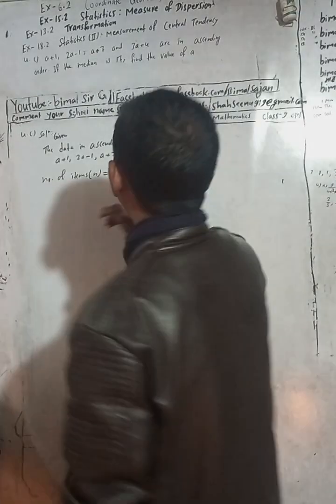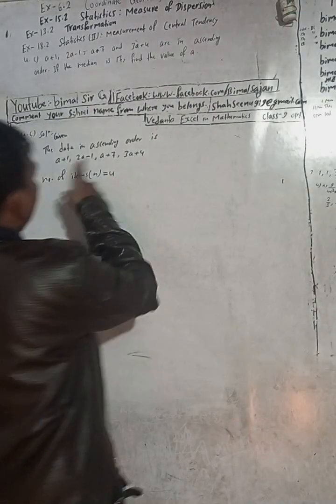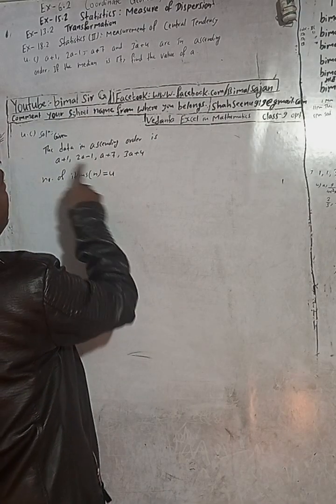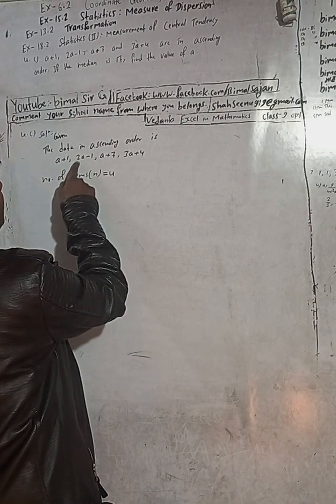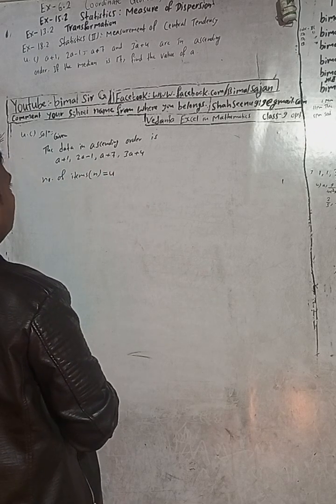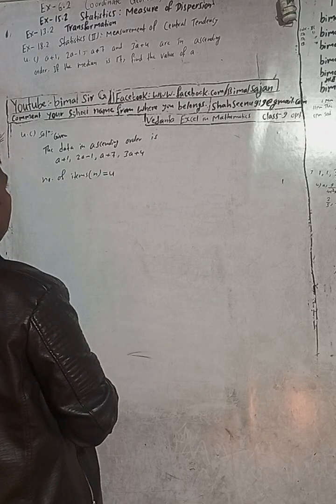Given the data in ascending order, the number of items is 1, 2, 3, 4 — so there are 4 items total.